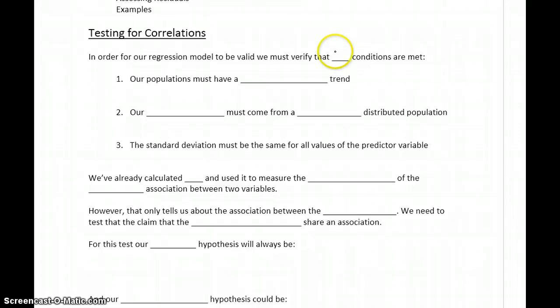In order for our regression model to be valid, there are three conditions we need to verify. Our populations must have a linear trend, since we're looking at linear relationships between data. Our residuals—the errors between observed and predicted values—must come from a normally distributed population. And the standard deviation must be the same for all values of the predictor variable.